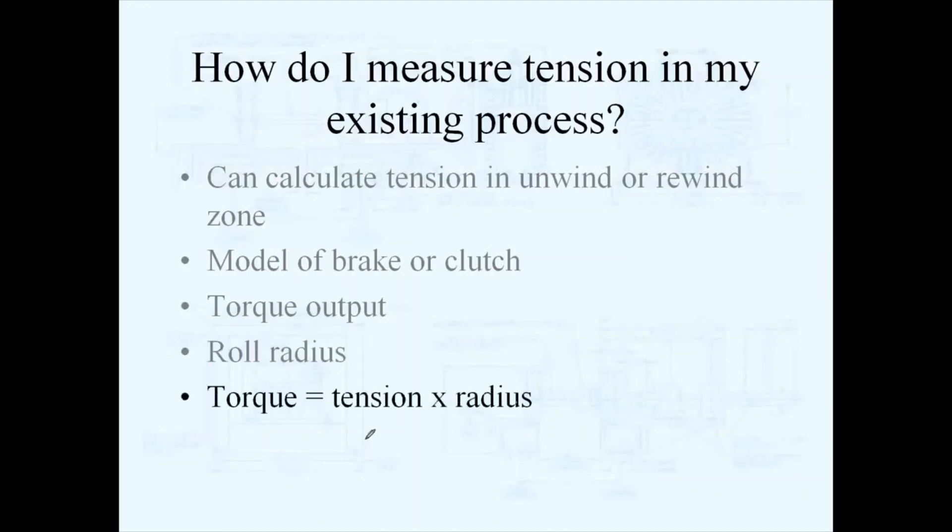If you know roll radius of the roll, we know that torque, in order to keep tension constant, the required torque is the tension times the radius. So algebraically, that means tension equals the torque divided by the radius.